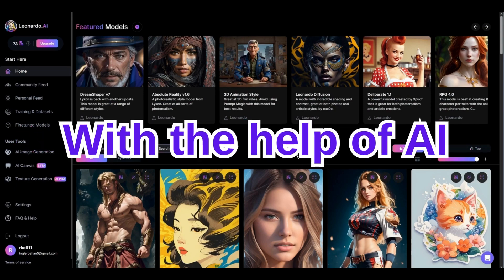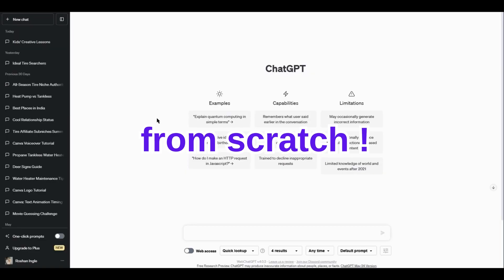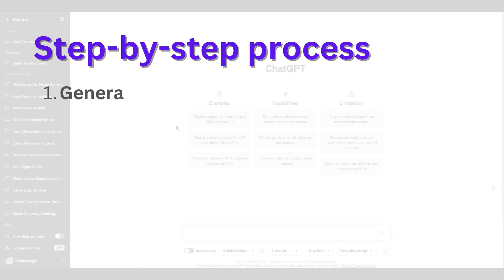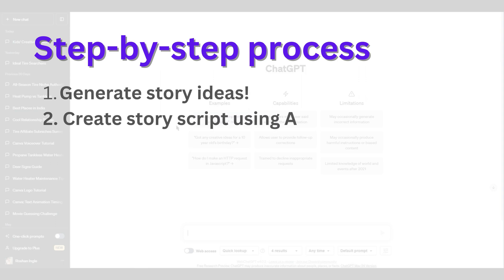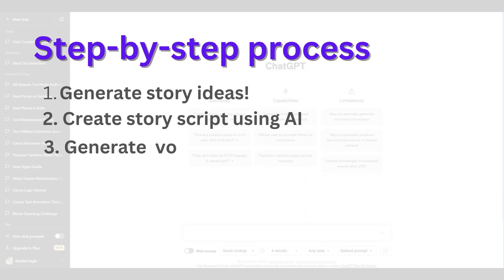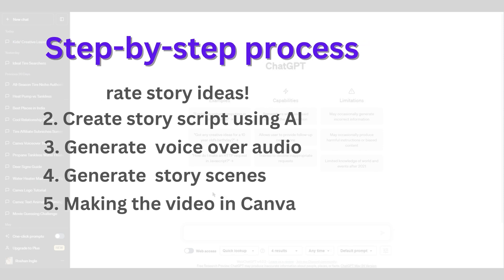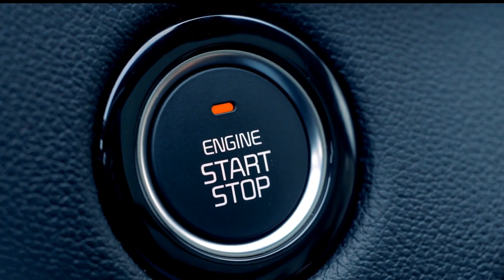Here are the steps involved in this process. First we will generate some interesting story ideas and then create a script with the help of ChatGPT. Then we will convert that script into voiceover with a free AI voiceover tool, create visuals using an AI image generator, and then combine all of them together in the Canva editor. So let's get started.